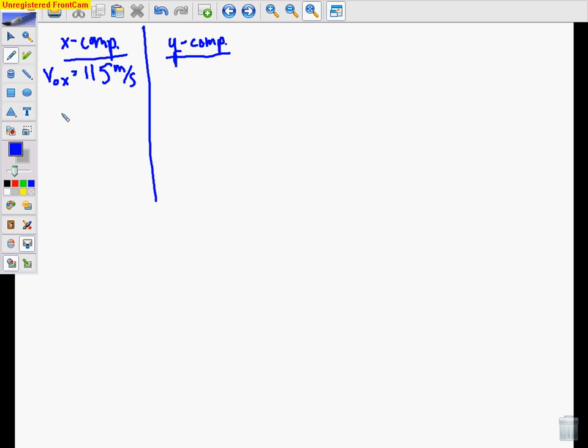We talked about in class, since there's no acceleration, or since there's nothing pushing or pulling it to the left or right, our acceleration in the X direction is also zero. Since the acceleration is zero, what does that actually mean about the velocity? Acceleration is the change in velocity over time. If that is zero, that means there's no change in velocity as time goes on. So we also know that the final velocity in the X direction is 115.